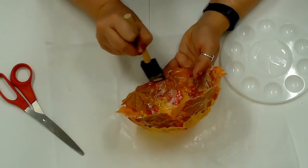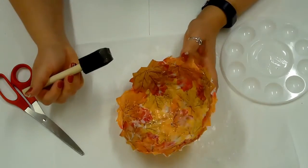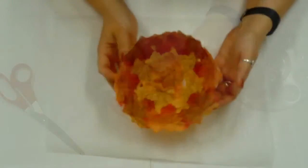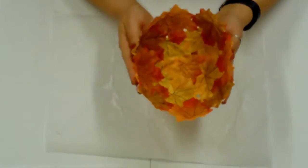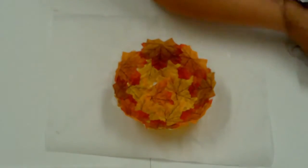Apply a layer of glue to the inside of the bowl and leave to dry for 24 hours. The artificial leaf bowl will still be flimsy. To stiffen the bowl, spray with a clear varnish.